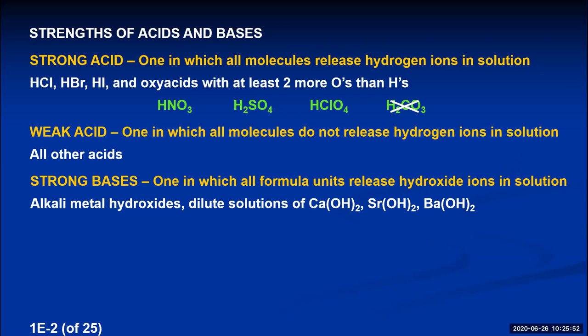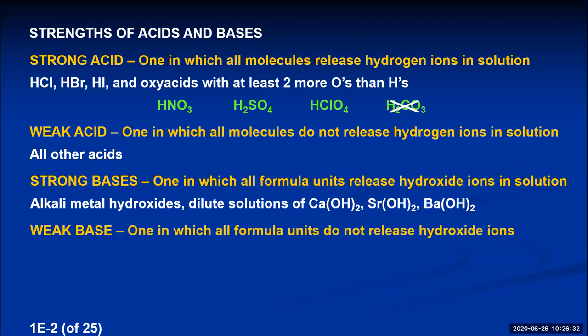In the second column on the periodic table, at the bottom, are calcium, strontium, and barium. When those three metals form hydroxide compounds, they completely dissolve in dilute solutions, creating lots of hydroxide ions — so they're also considered strong bases. All other metallic hydroxides are weak bases, and all covalently bonded base molecules are weak as well. Weak bases are ones where the formula units release hydroxide ions less than 100% of the time.